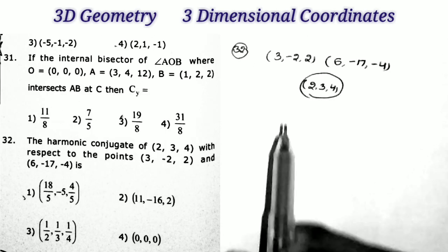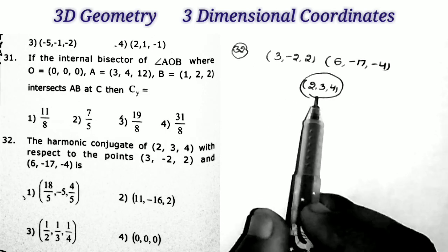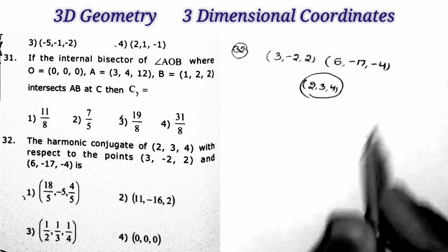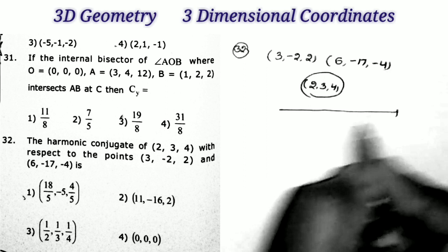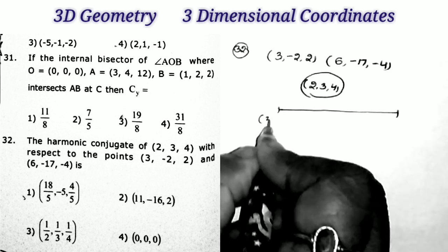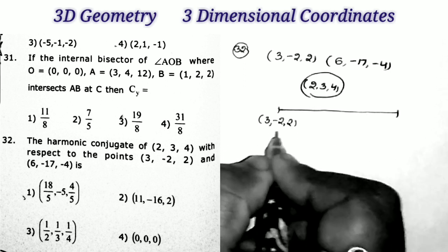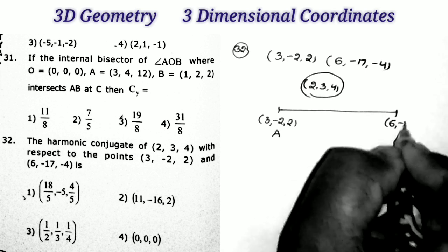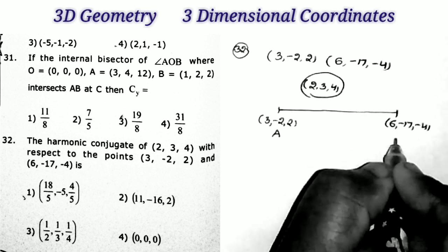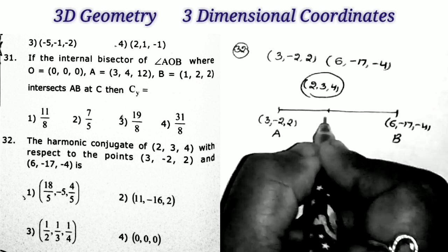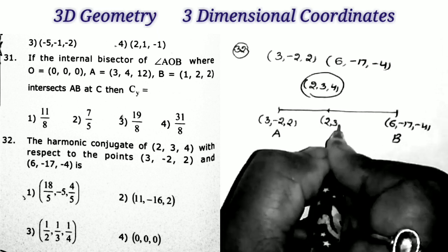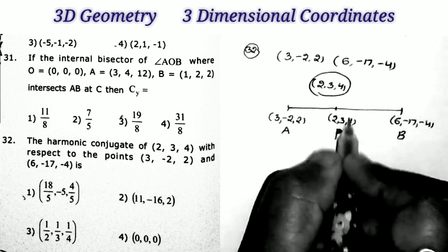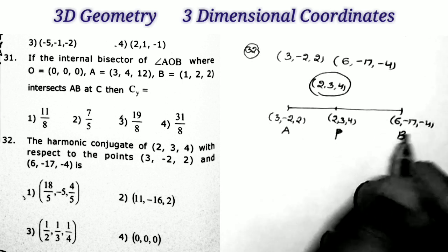Next question, number 34. The harmonic conjugate of (2, 3, 4) with respect to the points (3, -2, 2) and (6, -7, -4). We want the harmonic conjugate. We want the harmonic conjugate of point B = (2, 3, 4) with respect to this line segment.